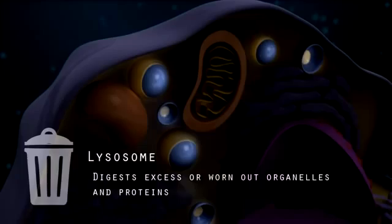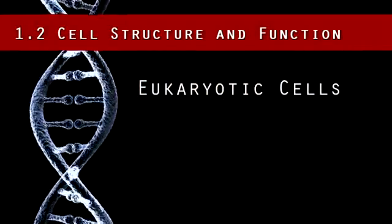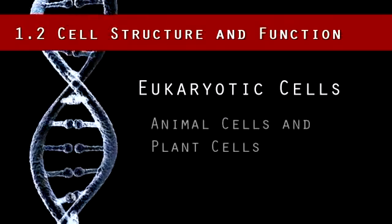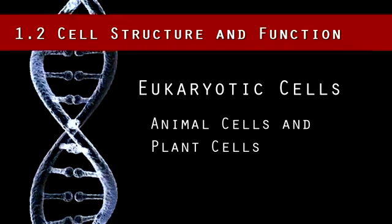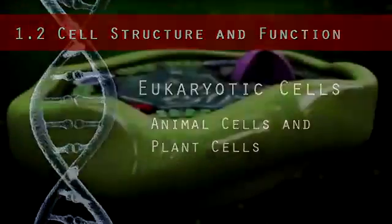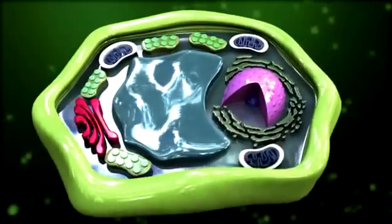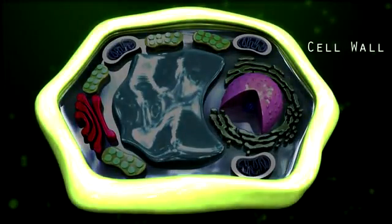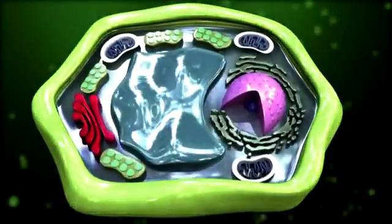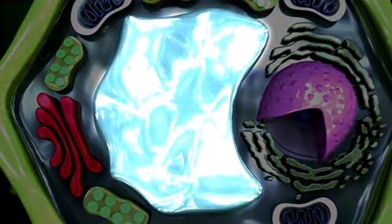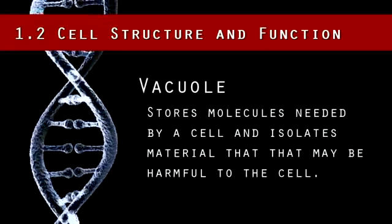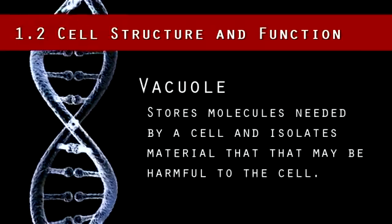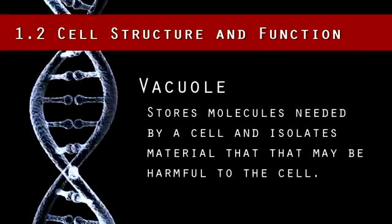The lysosome is the trash man of the cell because it digests excess or worn-out organelles and proteins by breaking them down and removing them. There are actually two types of eukaryotic cells: animal cells and plant cells. Both types of cells are very similar, but there are three distinct differences. First, plant cells have a cell wall surrounding the plasma cell membrane, while animal cells just have a cell membrane. Secondly, there is often just one large central vacuole found in plant cells, whereas animal cells have a few small ones. The vacuole stores molecules needed by a cell and also isolates material that may be harmful to the cell.